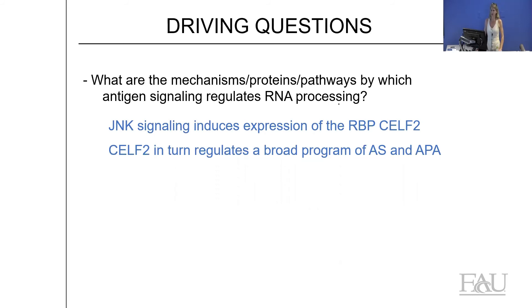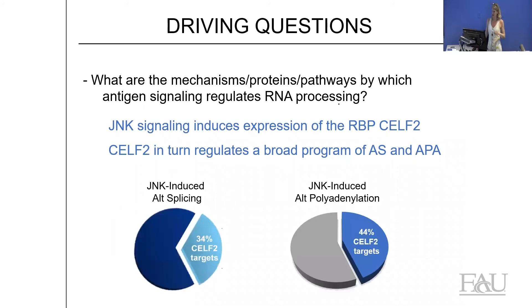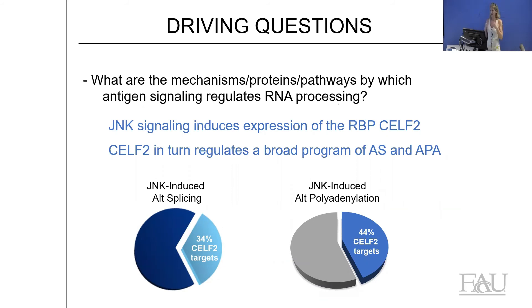In conclusion for this section: we have followed a line of evidence linking a particular signaling pathway and a particular RNA binding protein — the JNK–SELF2 axis — to both alternative splicing and alternative polyadenylation. To be clear, while SELF2 explains a significant fraction of the changes in gene expression seen upon T-cell activation, there is still 50 to 60% of splicing and polyadenylation events not explained by SELF2. Some of these have been linked to other pathways and proteins, but about a third remains undefined and continues to be an active area of investigation.